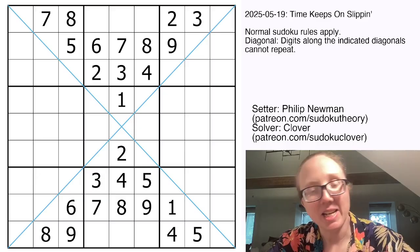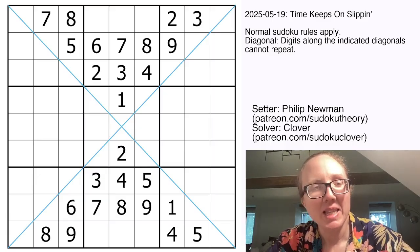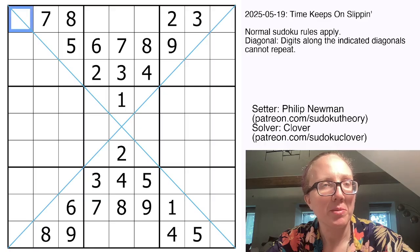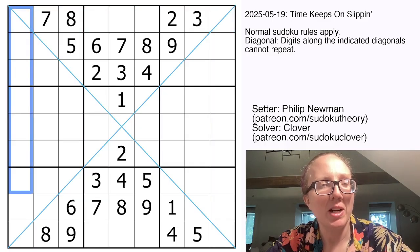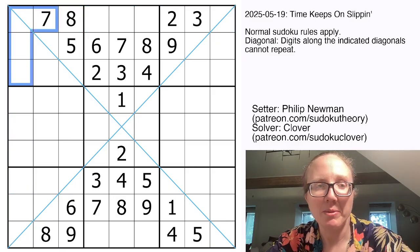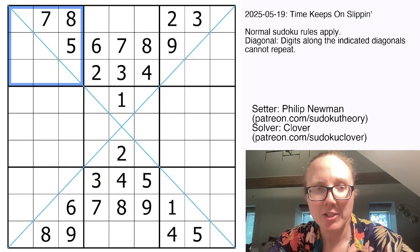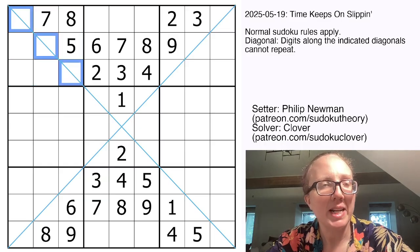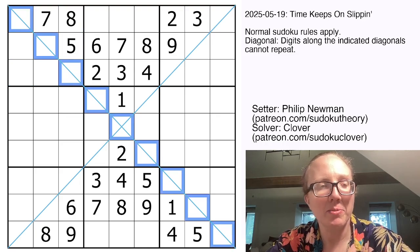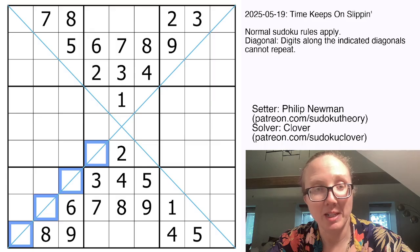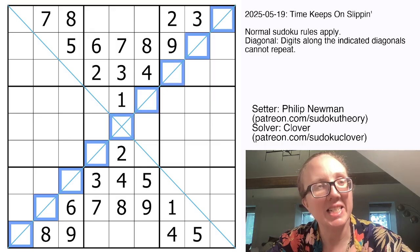This is a diagonal Sudoku. That means we have standard Sudoku rules, so placing the digits 1 through 9 once each in each row, each column, and each outlined 3 by 3 region. And in addition to that, we have two diagonals that are marked in blue, and along each of these diagonals, we also have to place the digits 1 through 9 once each. And that's it.